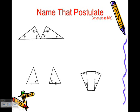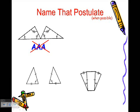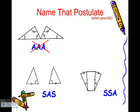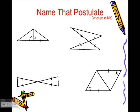Pause the video and try these three out. The first one, AAA, was that one of the ones we could use? No, AAA was not a postulate we could use. The next one was SAS, side angle side, because the angle is between the sides. And finally, the third one was SSA, because you have side, side, angle. And was that one we could use? No, it was not.